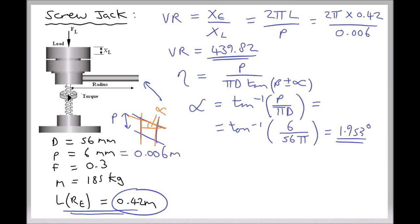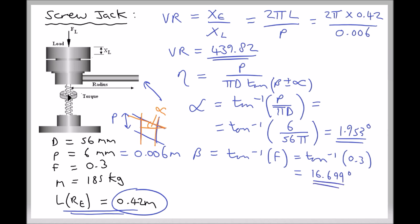We can now find our equivalent value of beta, the friction angle, which is arctan of the coefficient of friction. In this case arctan of 0.3 gives an equivalent friction angle equal to 16.699 degrees. This shows us that friction has a huge impact on the overall efficiency of the device. Let's note our values of alpha and beta, and then calculate our efficiencies for lifting and lowering operations.